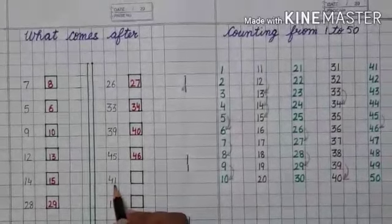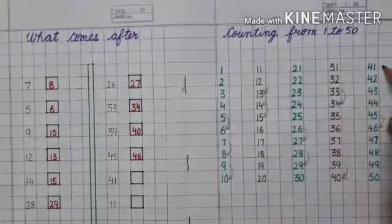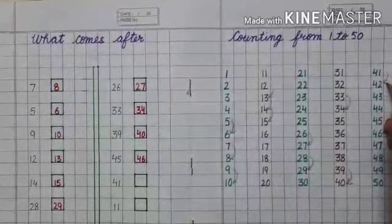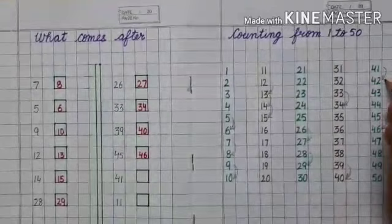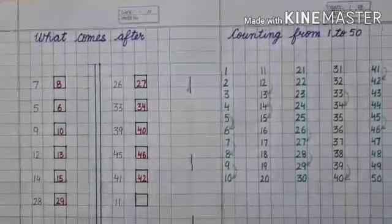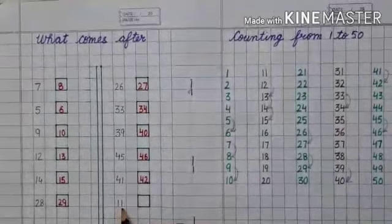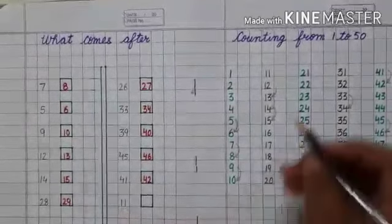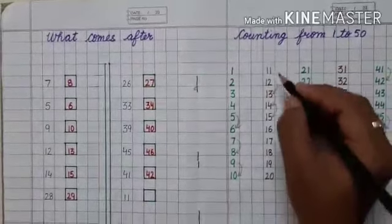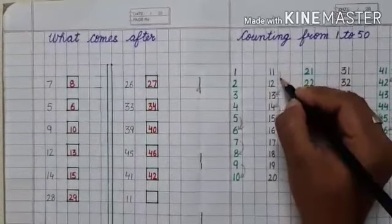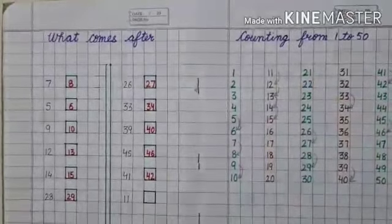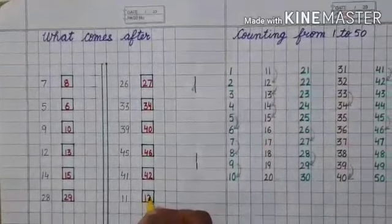Next number is forty-one. Again, you have to see the series of forty-one to fifty. What comes after forty-one? Forty-two. Write forty-two in the box. Next number is eleven. You have to see the series of eleven to twenty. What comes after eleven? Twelve — twelve is the next number. Write twelve in the box.